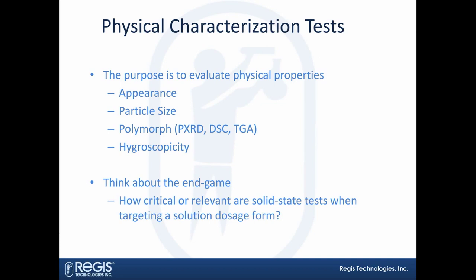Physical characterization tests evaluate physical properties and are often descriptive. They include things like appearance, particle size, polymorphs, and hygroscopicity. This last point is important: you need to think about the end game of the methods you're working with and ask yourself how critical it is to look at something like polymorph or particle size if you're eventually targeting a solution dosage form. Those questions need to be thought through, along with how much time and energy you want to put into that kind of development.